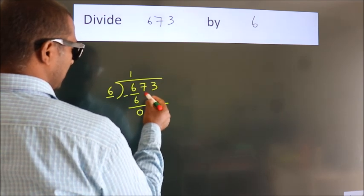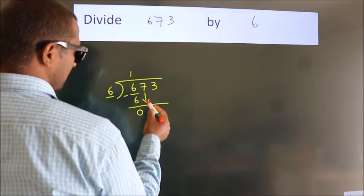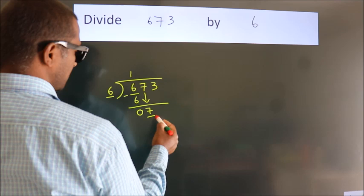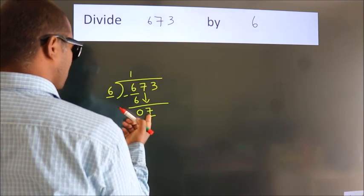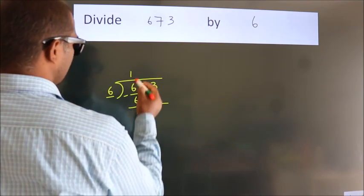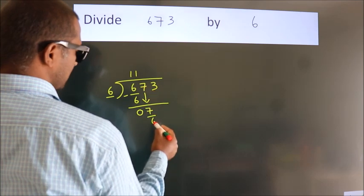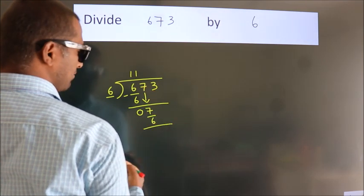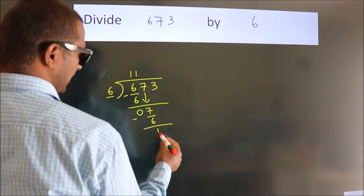After this, bring down the next number. So 7 down, giving us 7. A number close to 7 in the 6 table is 6 once, which is 6. Now we subtract and get 1.